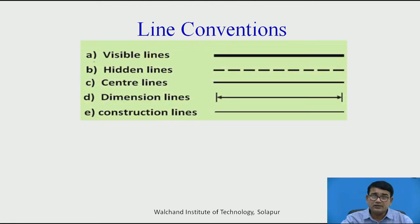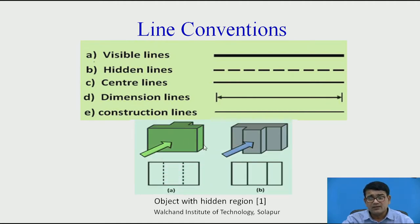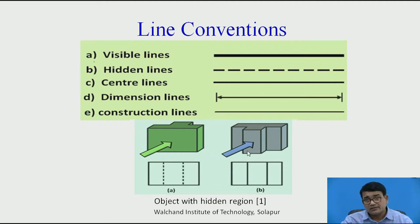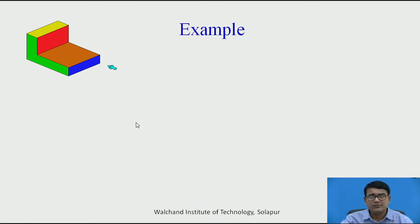Now I am showing some line types. Visible lines are dark solid lines; hidden lines are dashed lines; center lines have a specific pattern; and there are dimension lines with arrows at both ends. For an example object, looking in the direction of the arrow, you get a rectangle as the front view. The edges that are invisible from the front view are shown as dotted hidden lines.